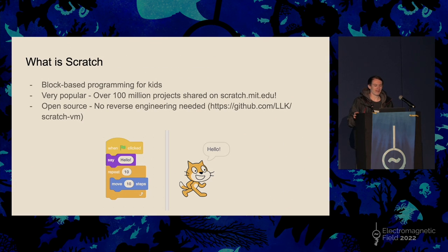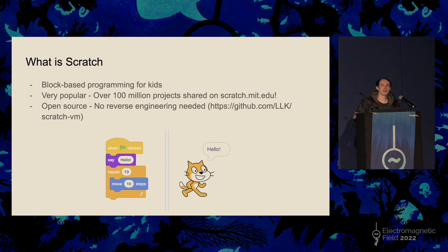Now, time to talk about Scratch. I'm sure you've all heard of it, but you might not realize how popular it is. There have been over 100 million projects shared on the Scratch website. By contrast, GitHub has about 150 million public repositories — more, but not very much more. I'd never have guessed they were in the same order of magnitude. Scratch is open source, which means I don't need to reverse engineer it — the source code for their runtime is on GitHub.